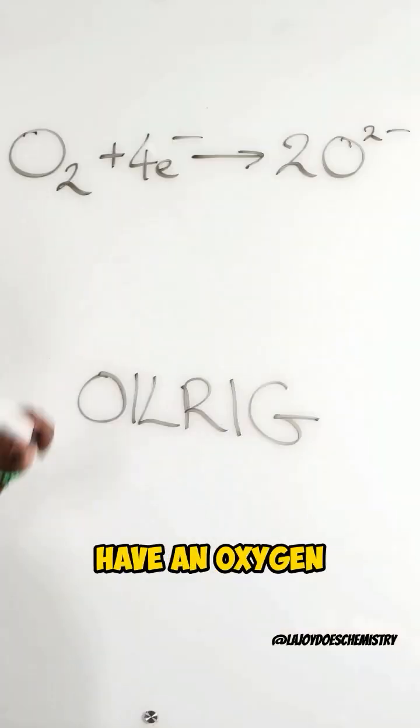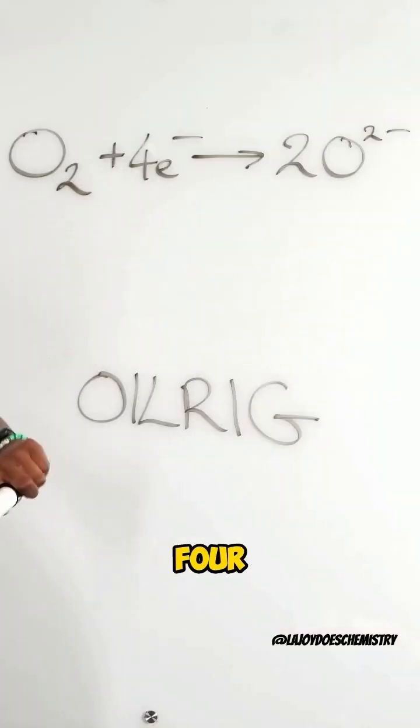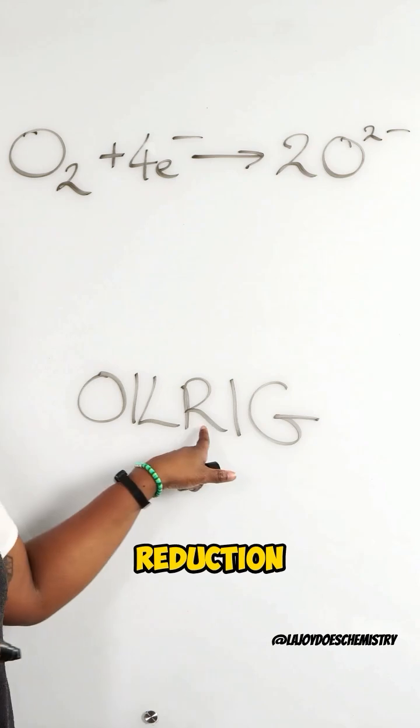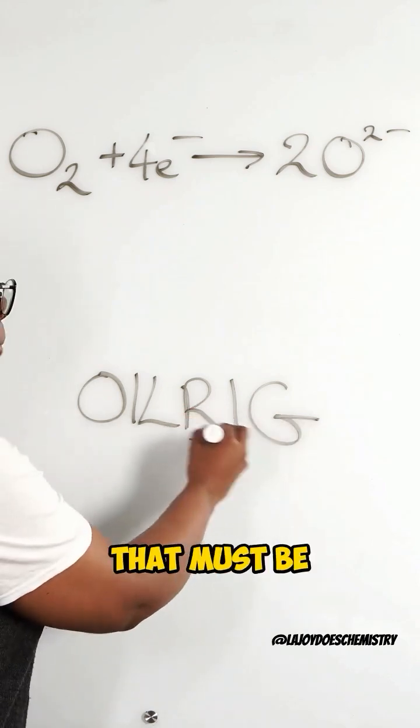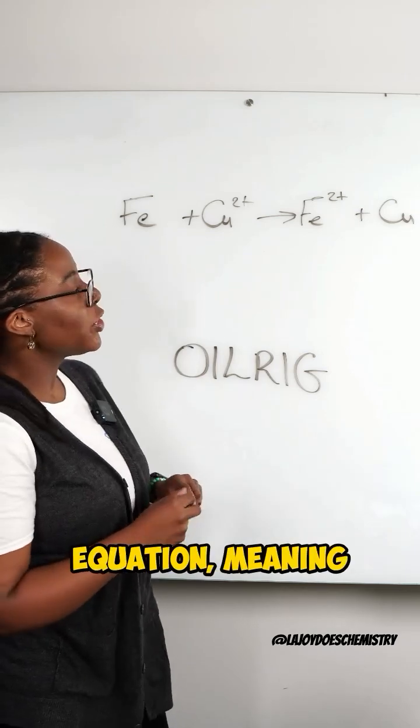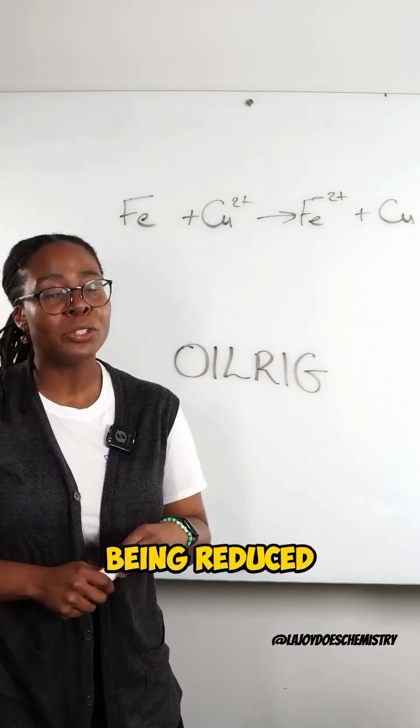So here we have an oxygen molecule gaining four electrons, and we know that reduction is gain, so that must be reduction. And finally, we have a redox equation, meaning that one species is being reduced and the other is